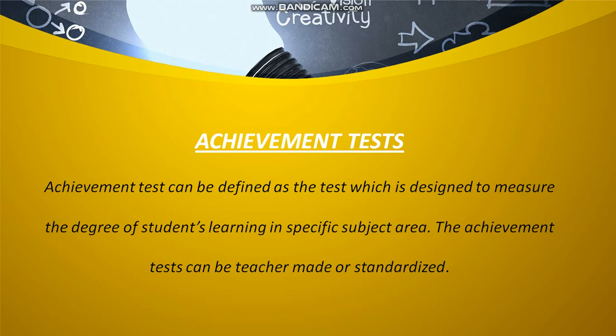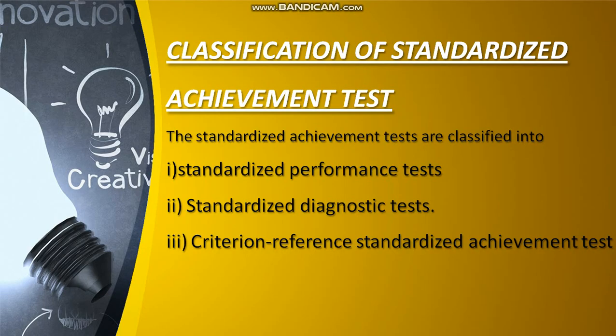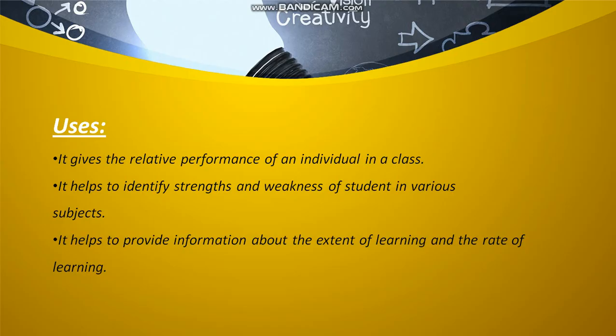Achievement Test is going to be discussed. An Achievement Test can be defined as a test designed to measure the degree of students' learning in a specific subject area. The achievement test can be teacher-made or standardized. Standardized achievement tests are classified into three classes: standardized performance test, standardized diagnostic test, and criterion-referenced standardized achievement test. It is used for the relative performance of an individual in a class, helps to identify strengths and weaknesses of students in various subjects, and helps to provide information about the extent and rate of learning.